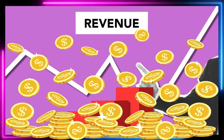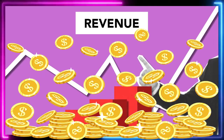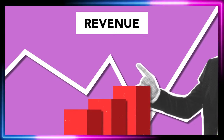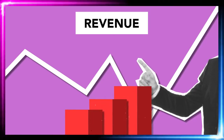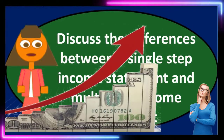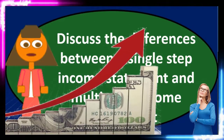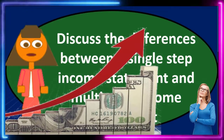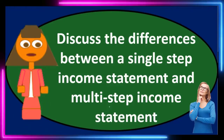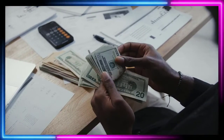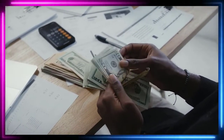With the multi-step income statement, we still arrive at the bottom line net income, but we have more steps along the way. The first is usually the net sales calculation — not net income, but net sales. We break out the contra sales account: sales minus sales returns and allowances, which are sales that basically didn't happen or are being reversed, giving us net sales.